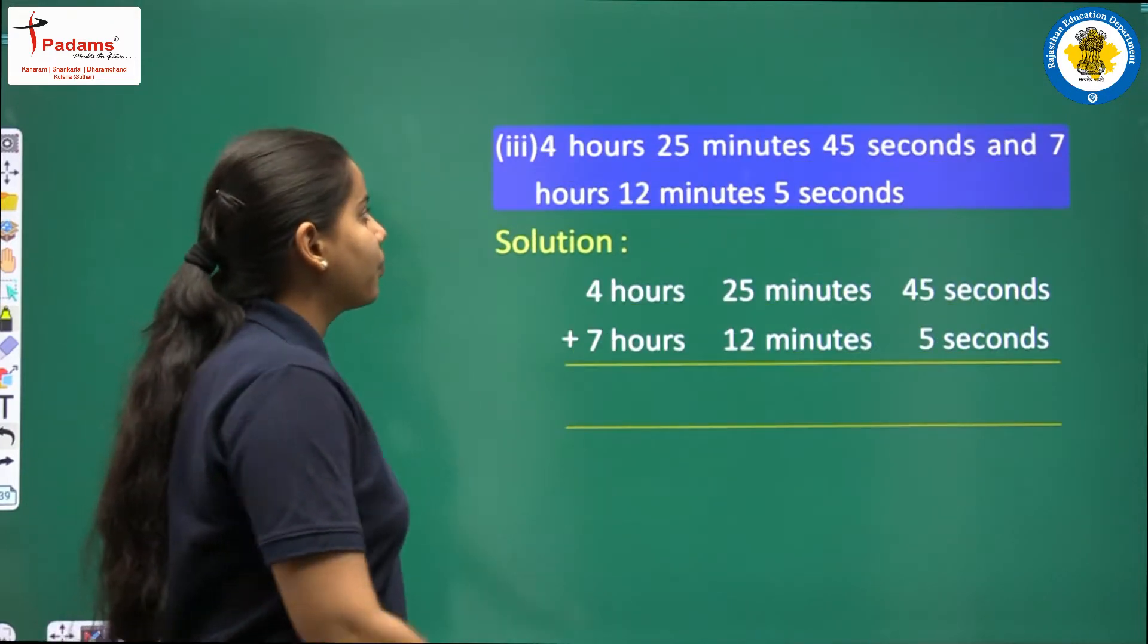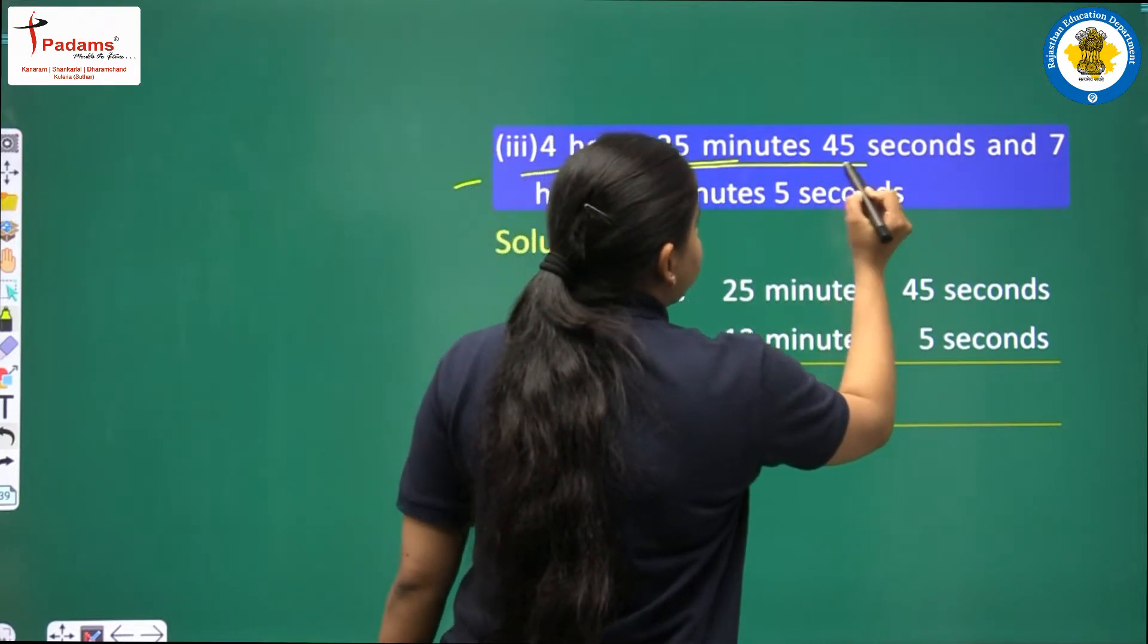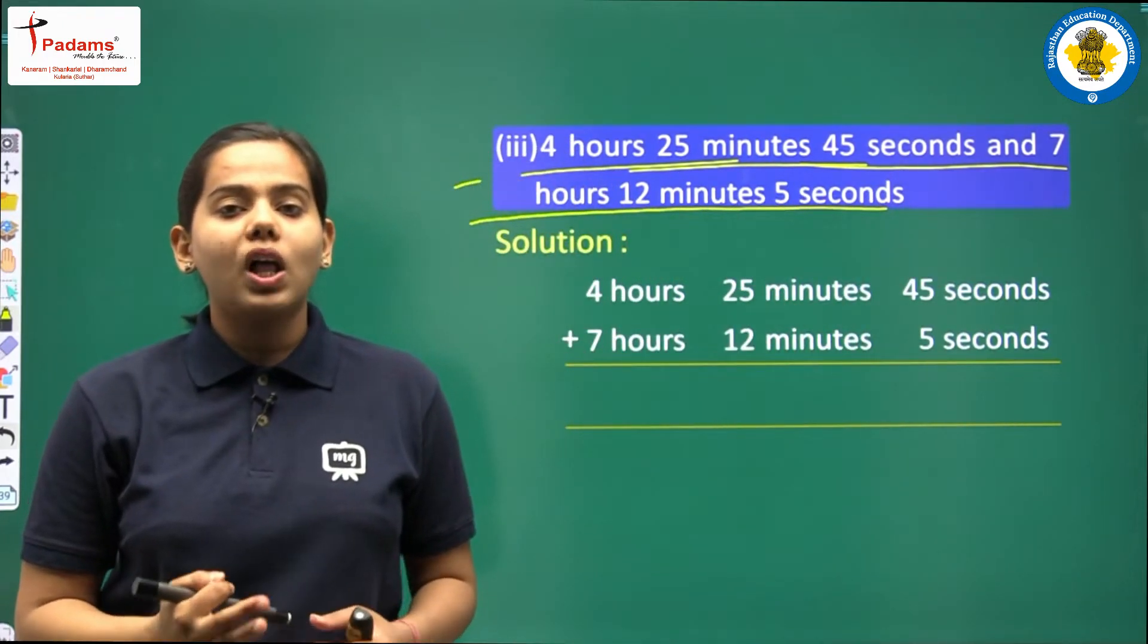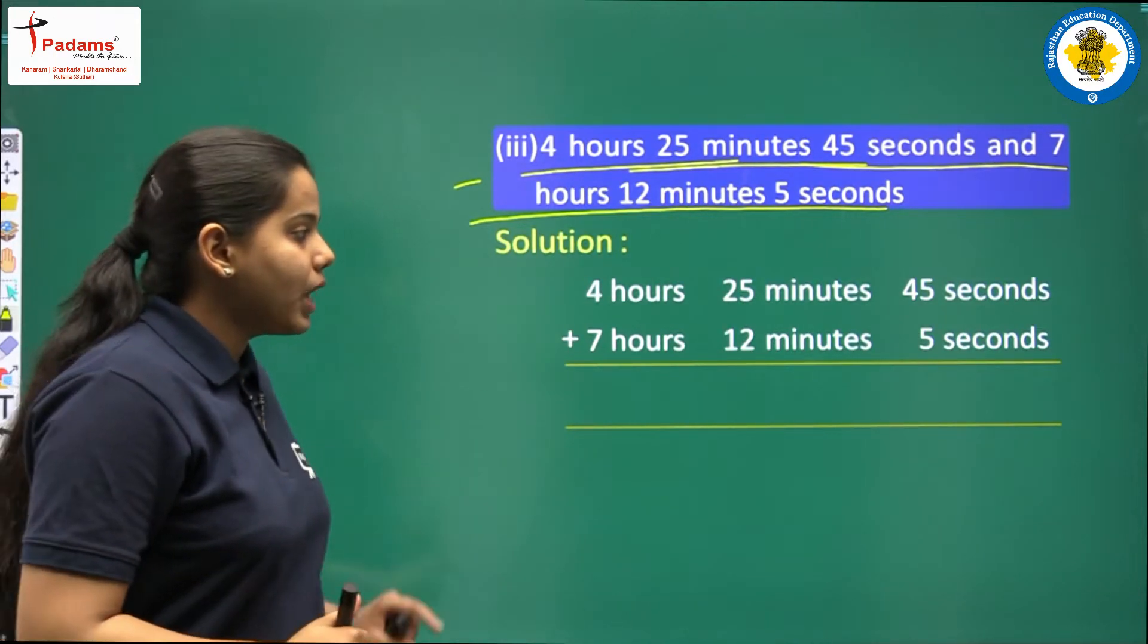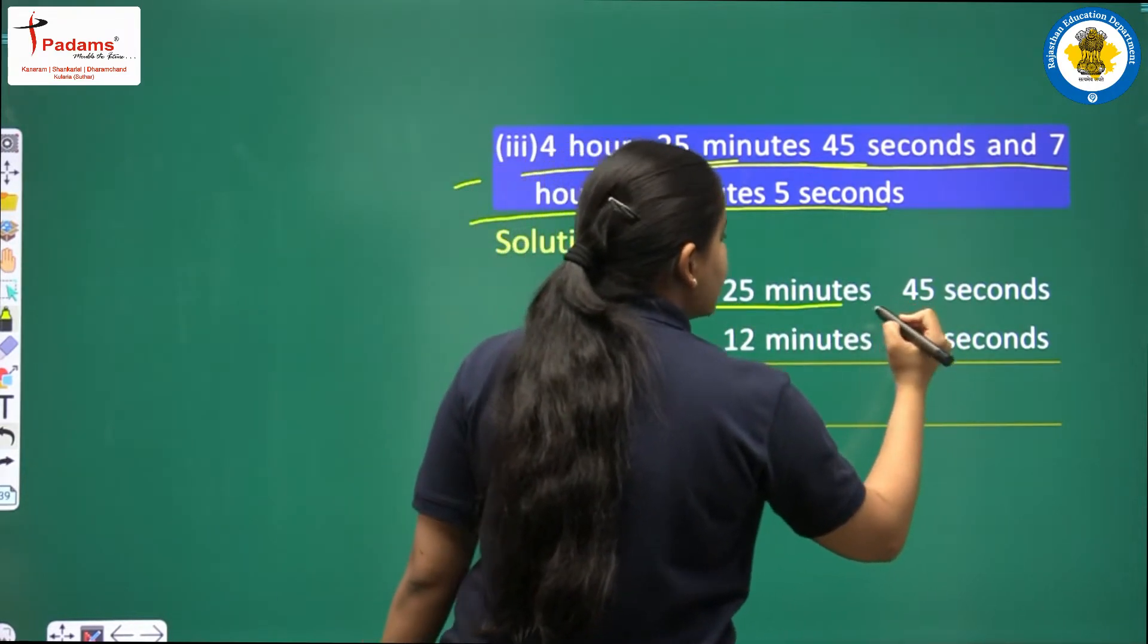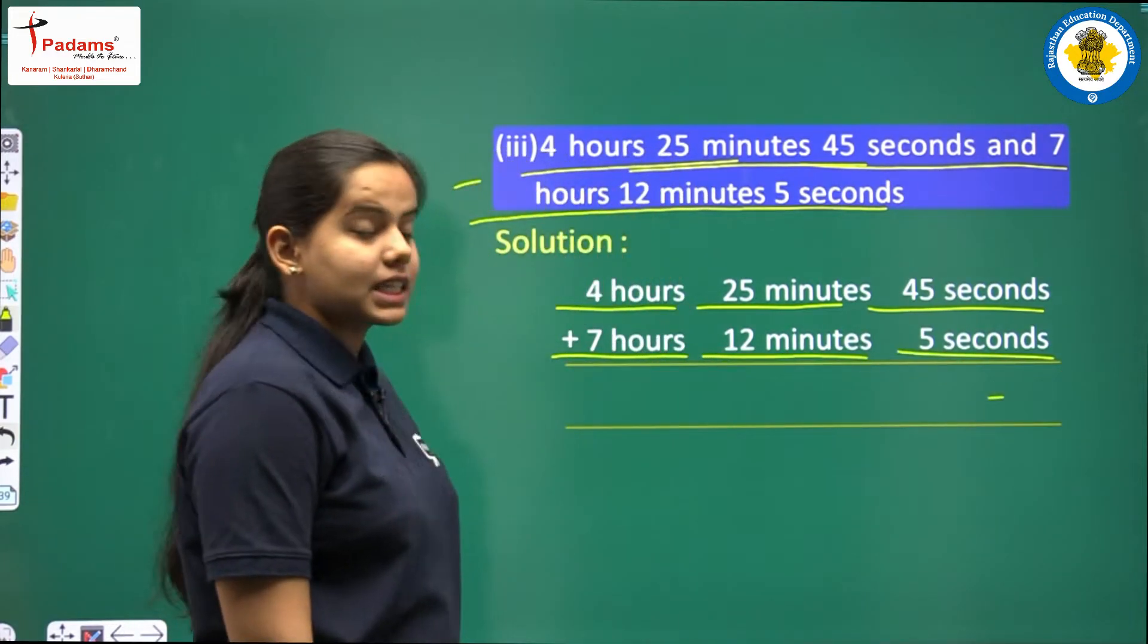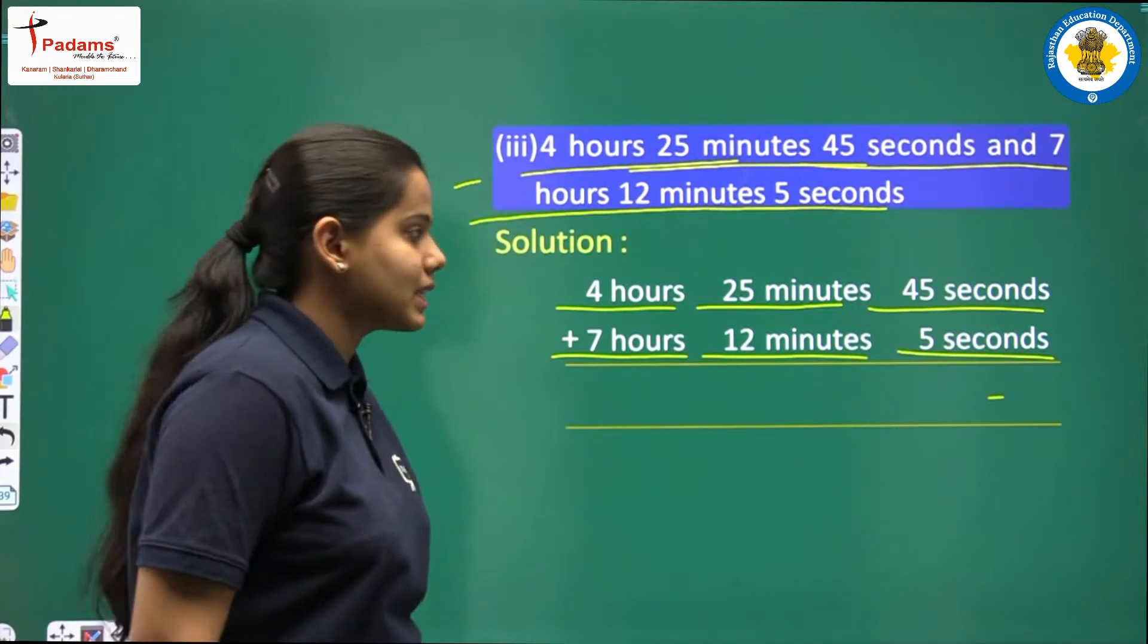This is 4 hour 25 minutes 45 seconds and 7 hours 12 minutes 5 seconds. In this question we have all the 3 units that is hours, minutes and seconds. Now we are going to solve in the same house same units. We have to add 4 hour 25 minutes 45 seconds with 7 hours 12 minutes and 5 seconds. We will start here from seconds because seconds here is the smallest house.